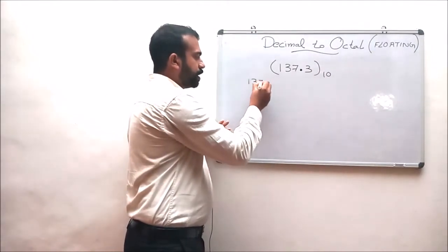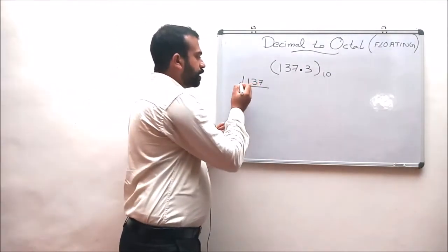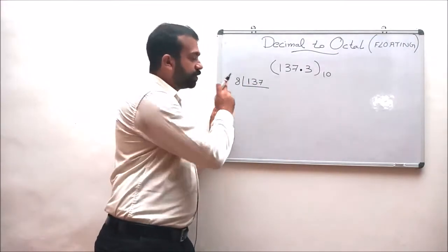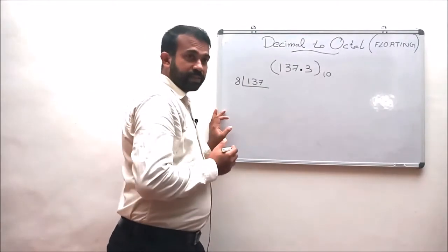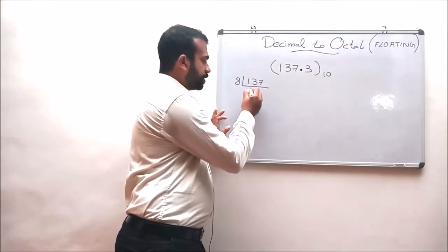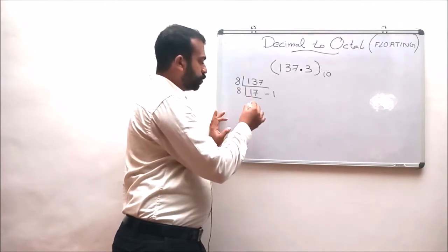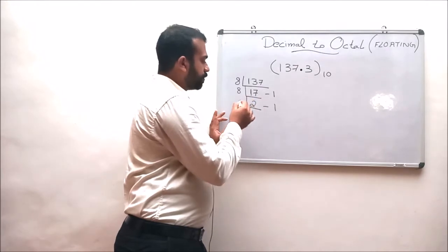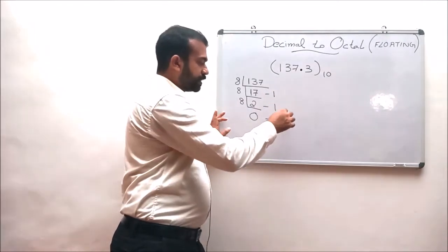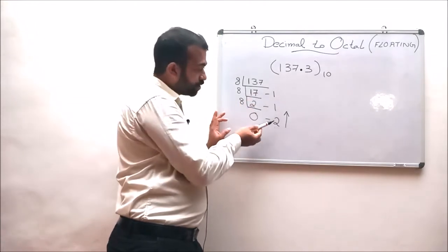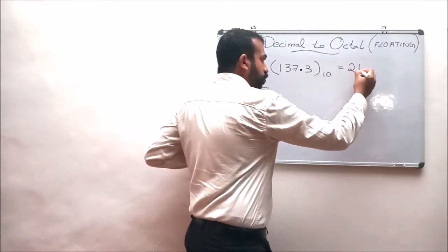The whole number part is 137. While converting the whole number part, what we have to do is continuously divide this number with the base or radix value 8 until the quotient becomes 0. So 137 divided by 8 will result in 17 times 8 with a remainder of 1. When 17 is divided by 8, the quotient is 2 with a remainder of 1. When 2 is divided by 8, the quotient is 0 with a remainder of 2. So the equivalent of 137, taken in bottom to top order, is 211.